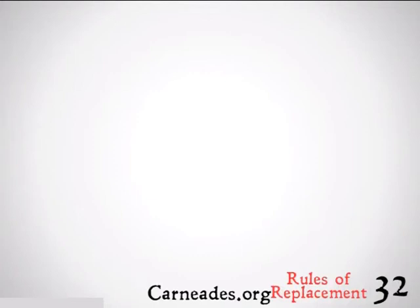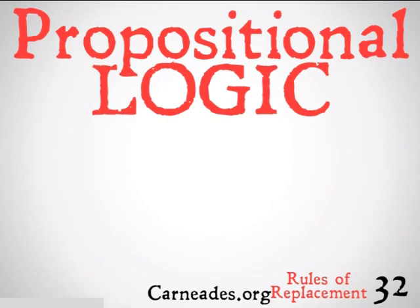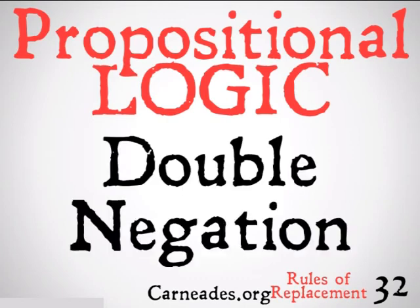Welcome back to 100 Days of Logic with 90 Second Philosophy, I'm Carnetist.org. Today we're going to be continuing with propositional logic and the rules of replacement, looking at something called double negation. Double negation is actually going to be the easiest rule of replacement we're going to cover in this set. It's pretty self-explanatory, and we've actually encountered it before in one of the exercises. Let's take a look at some examples.